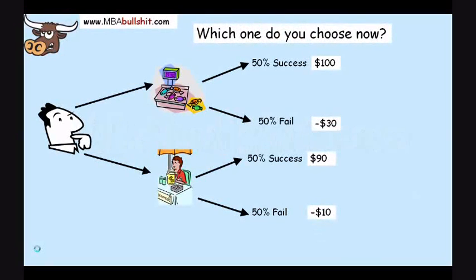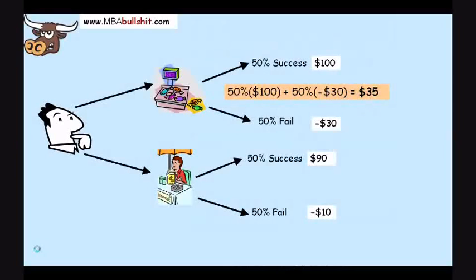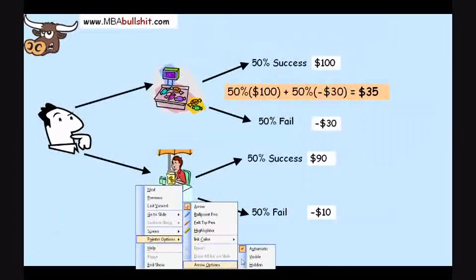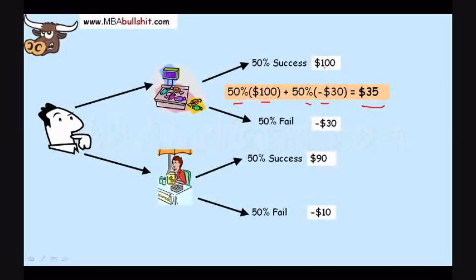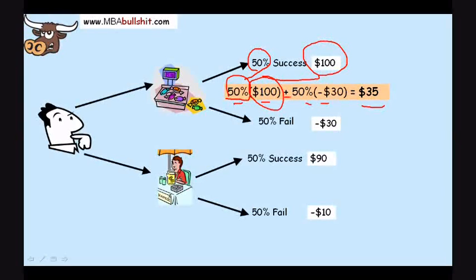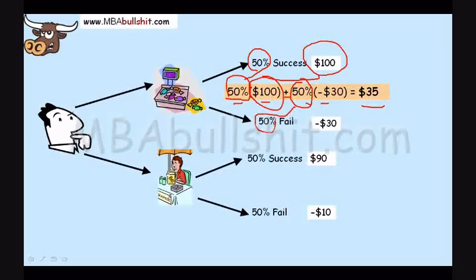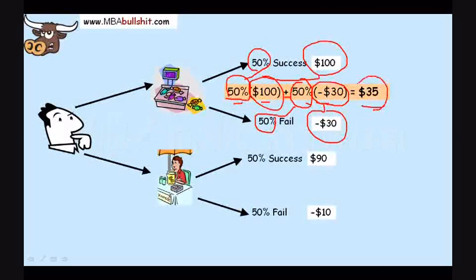Which one do you choose now? It's actually very simple — you would use a simple formula like this. It looks like: 50% times $100 plus 50% multiplied by negative $30. The 50% corresponds to the chance of success, $100 is the earnings on success, and the 50% chance of failure multiplied by negative $30 is the loss. We come up with a figure here — $35 — which we call an expected value.